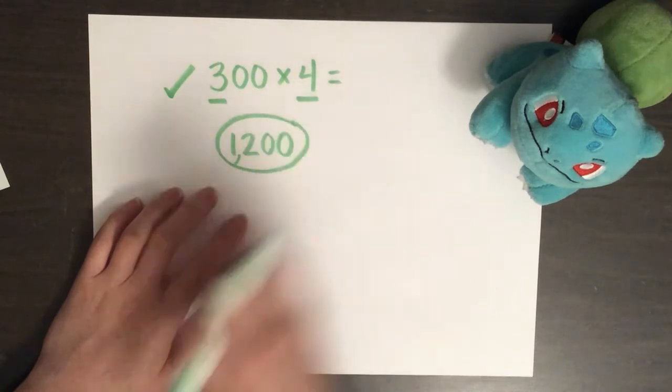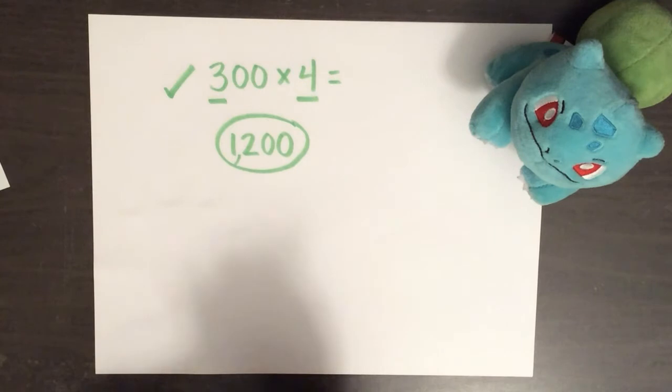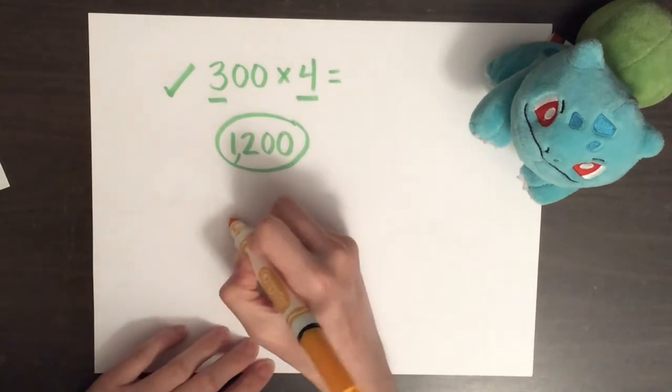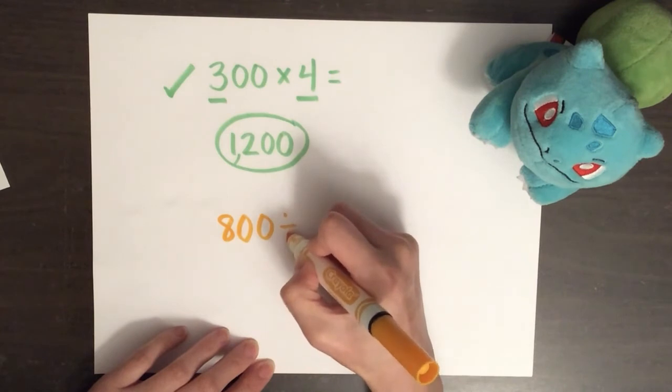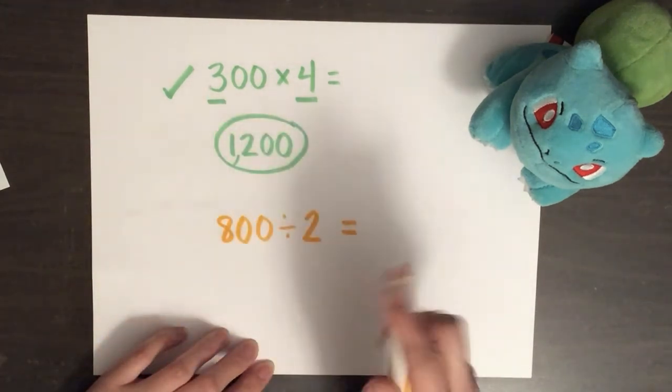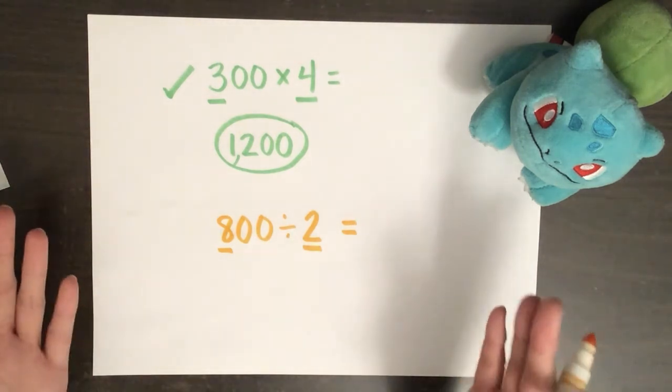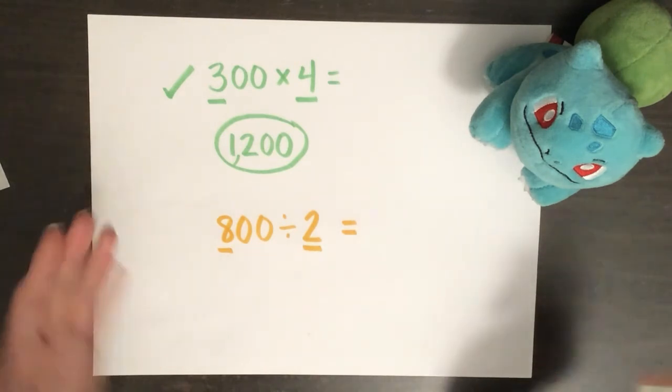Just like we used mental math to multiply numbers that end in zero, we can also use mental math to divide numbers that end in zero. So, here, let me show you. Let's try 800 divided by two. So, just like with our multiplication, let's find the basic division fact. Eight divided by two. Remember, if I'm not sure what eight divided by two is, I can always either think of a multiplication fact or I can draw a picture. So, I'll show you both.